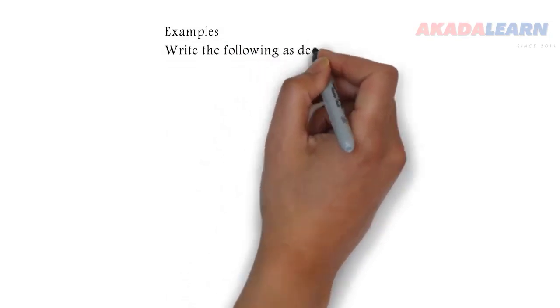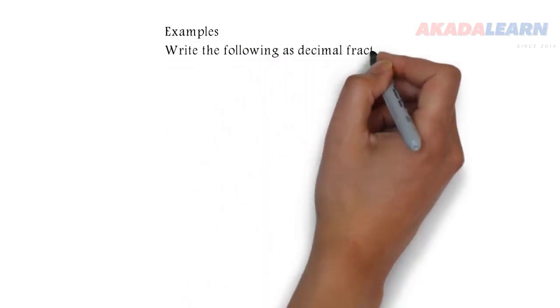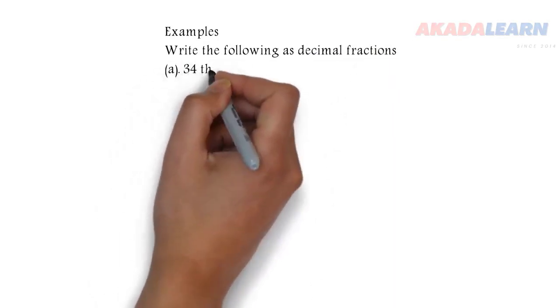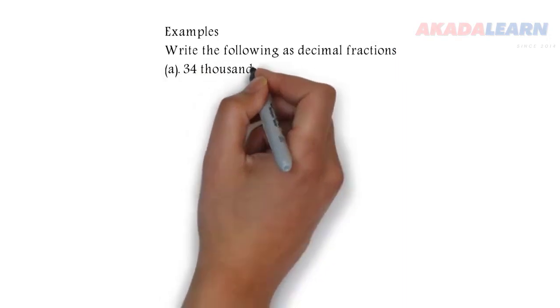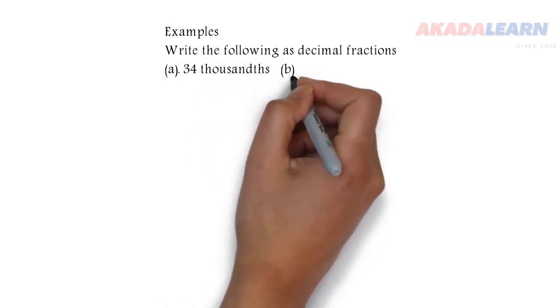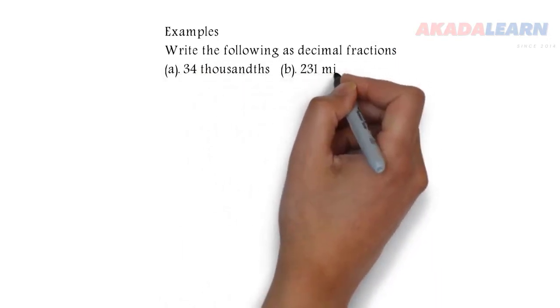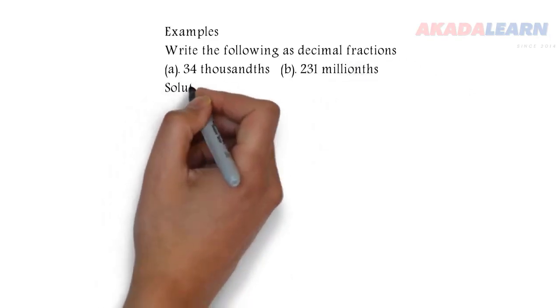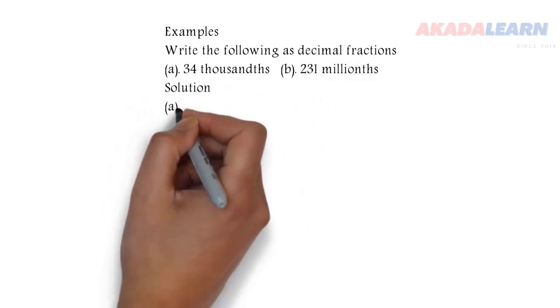The question says: write the following as decimal fractions. (a) 34 thousandths, (b) 231 millionths. Let's see how to do that.